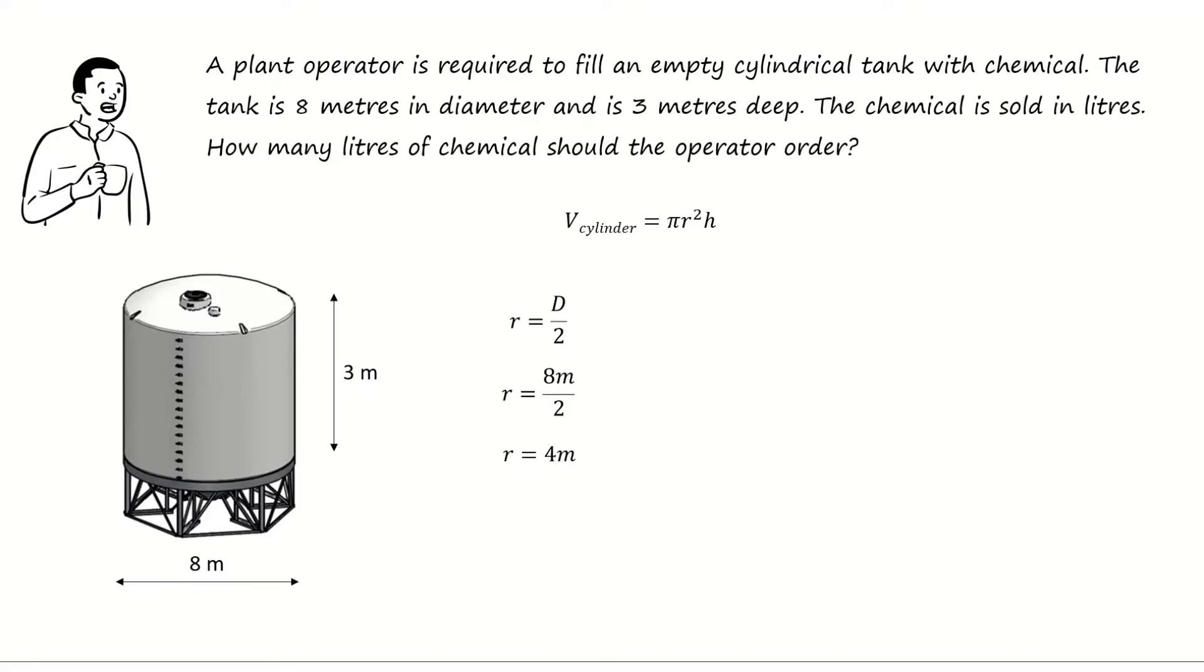Plugging 4 meters into the equation, pi times the radius squared, 4 meters squared, times 3 meters for the height, gives us a volume of the cylinder of 150.72 cubic meters.